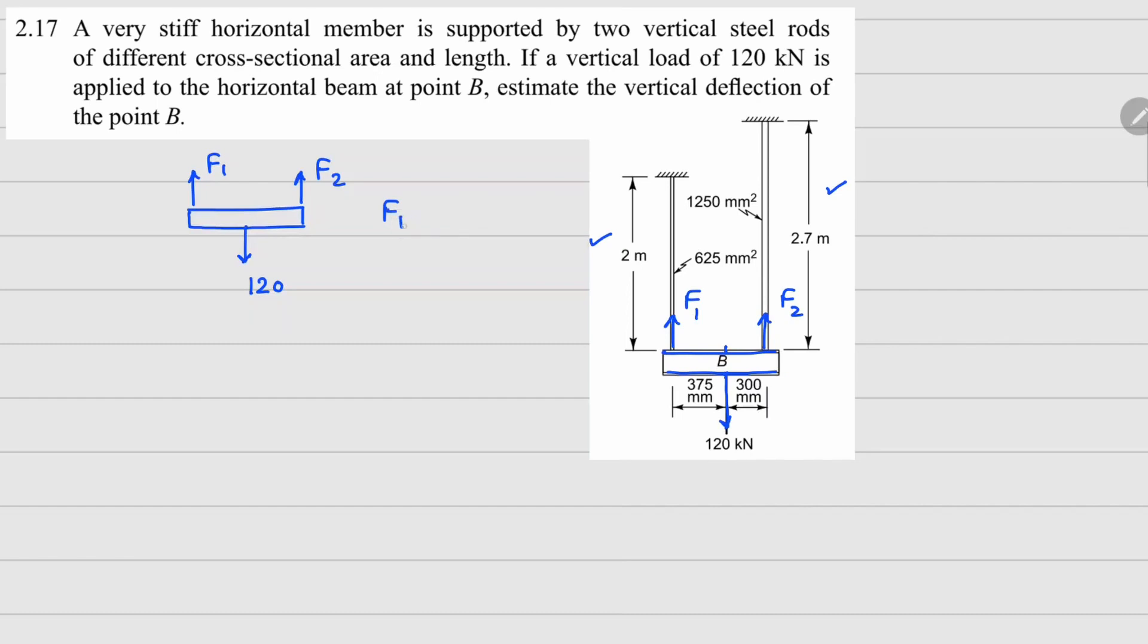From the force balance equation we can write down F1 plus F2 equals 120 kilonewtons. And if you do moment balance about this first point here, then 120 times 375 mm is going to be...